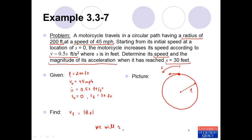We will use NT — normal-tangential coordinates. With NT coordinates, the direction of motion tangent to the path is the tangential direction, and perpendicular to that, pointed towards the center of curvature, is the normal direction. You could imagine that if we were trying to solve this problem in a fixed XY coordinate system, the components of the velocity and acceleration in the x and y directions would be constantly changing in a way that's not readily given. So solving this problem using NT coordinates makes it much easier.